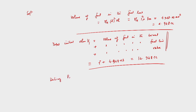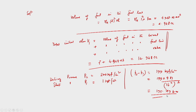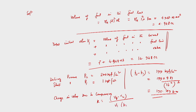Delivery pressure P₂ = 200 kgf/cm²; inlet pressure P₁ = 1 kgf/cm²; therefore P₂ − P₁ = 199 kgf/cm² = 195.19 bar. The coefficient of compressibility K = (V₁ − V₂) / (V₁ × (P₂ − P₁)).